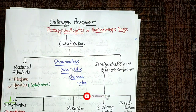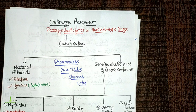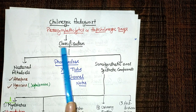Welcome to our channel Pharma Dolls. In the previous lecture we completed the sympathomimetics drugs and cholinergic agonist drugs, their receptors, classification, pharmacological actions, side effects, and clinical uses. In this lecture we will discuss the cholinergic antagonist drugs, also called parasympatholytics or anticholinergic drugs.